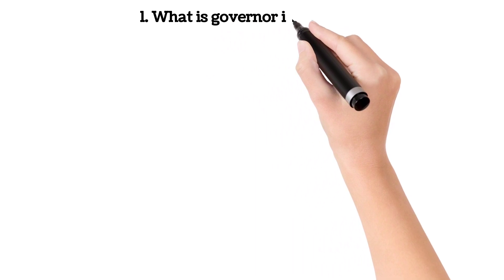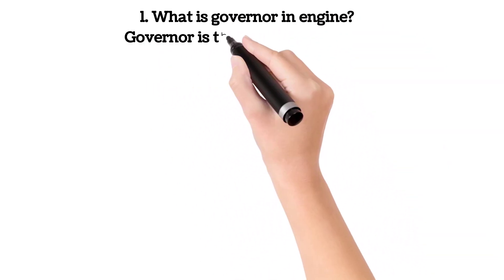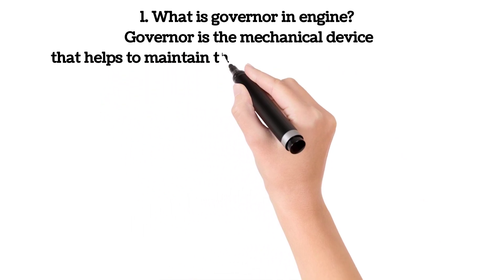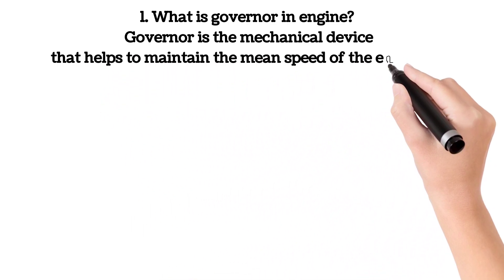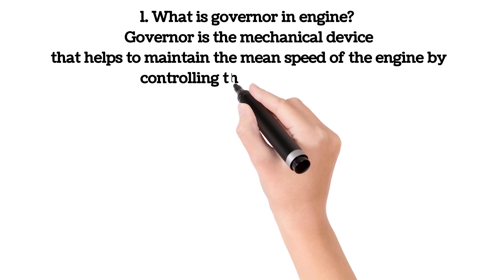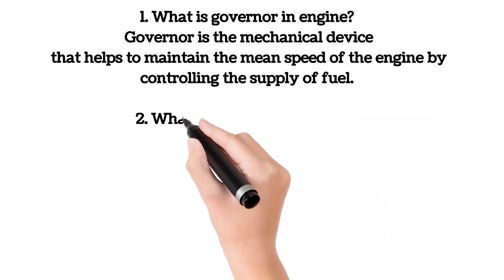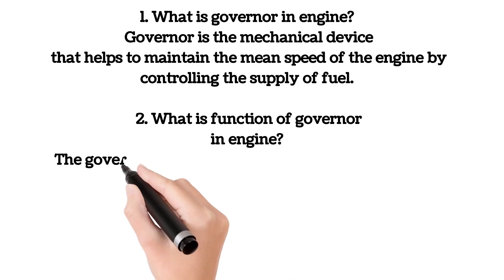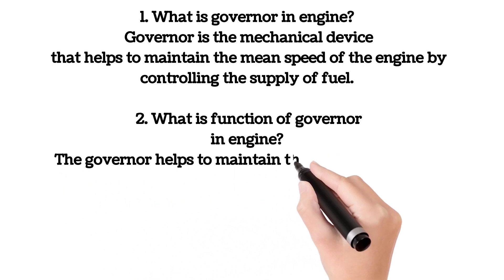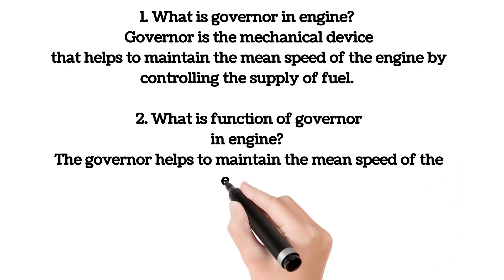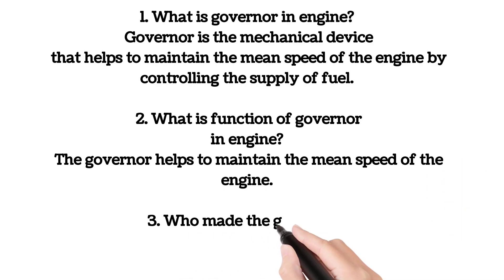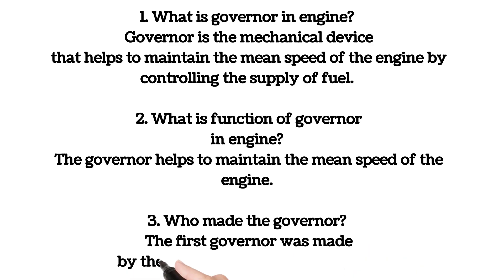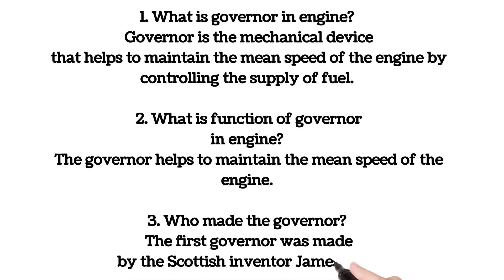Some important questions related to the governor: What is a governor in an engine? A governor is a mechanical device that helps to maintain the mean speed of the engine by controlling the supply of fuel. What is the function of a governor in an engine? The governor helps to maintain the mean speed of the engine. Who made the governor? The first governor was made by the Scottish inventor James Watt.